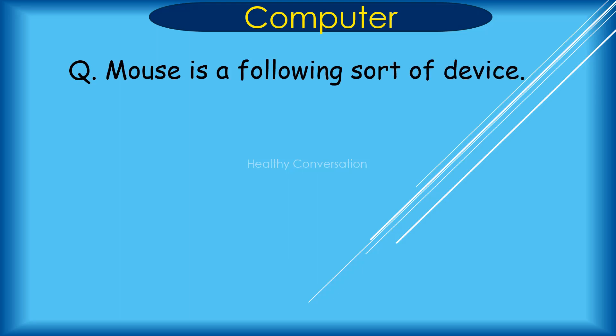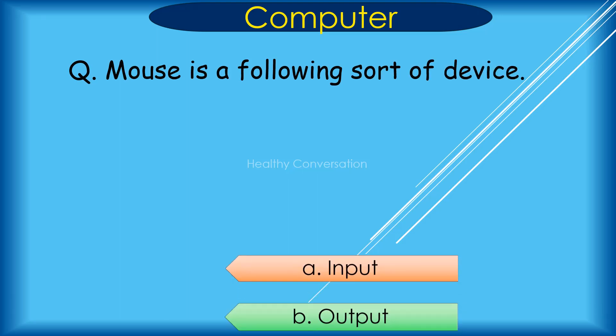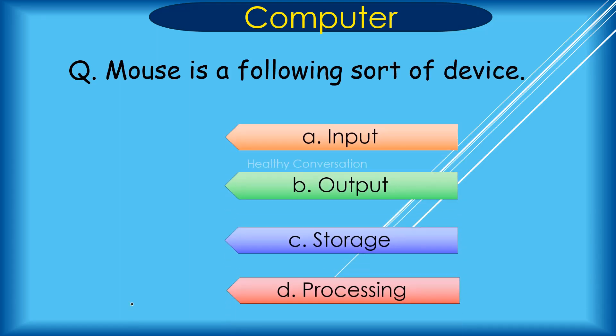Question: A mouse is the following sort of device. A. Input, B. Output, C. Storage, D. Processing. Correct answer is A. Input.